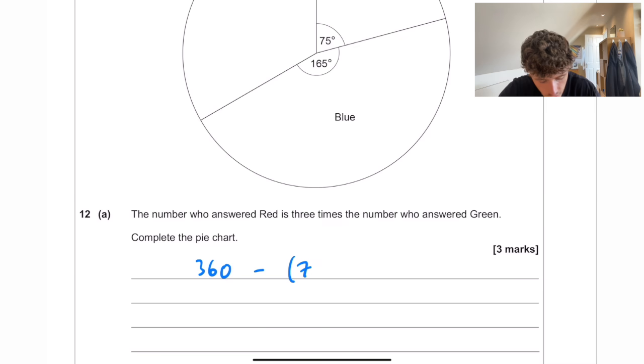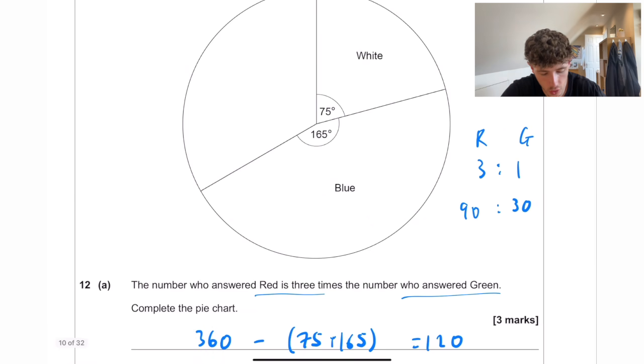So 360 take away 75 add 165. So 75 add 165 is 240. So that means if we take that away, it's going to be 120. And if red is three times the number of green, this is almost like splitting it in the ratio of three to one. So that's going to be 90 and that's going to be 30. So you would draw this accurately with a ruler, of course. And you would have your red here and your green here in a little 30 degree angle there.